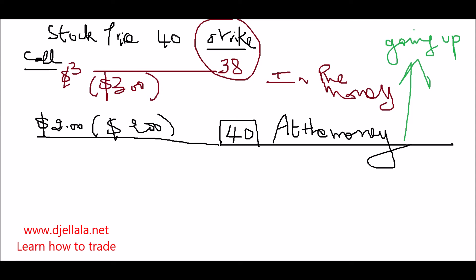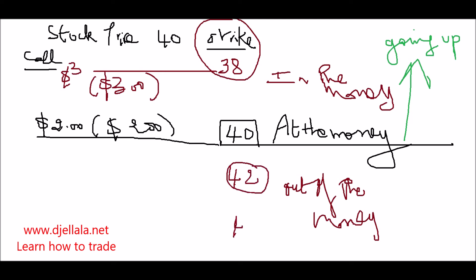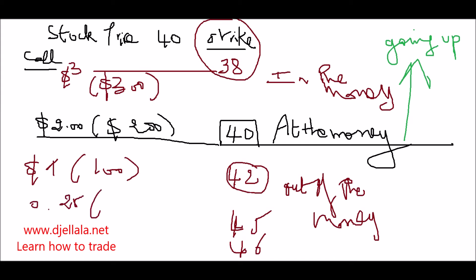If you want to buy cheaper, you go above $40 — that's called 'out of the money,' and it's the cheapest you can go. For example, a $42 strike might cost $1, so you pay $100. A $45 strike might be $0.25, so you pay $25. And a $46 or higher strike could be $0.10, meaning you only pay $10.